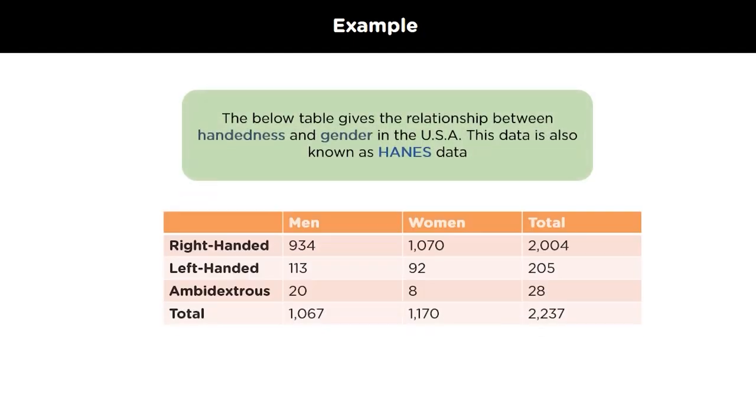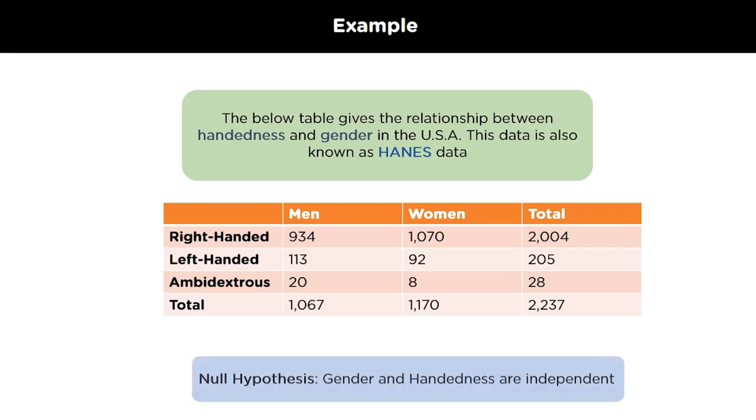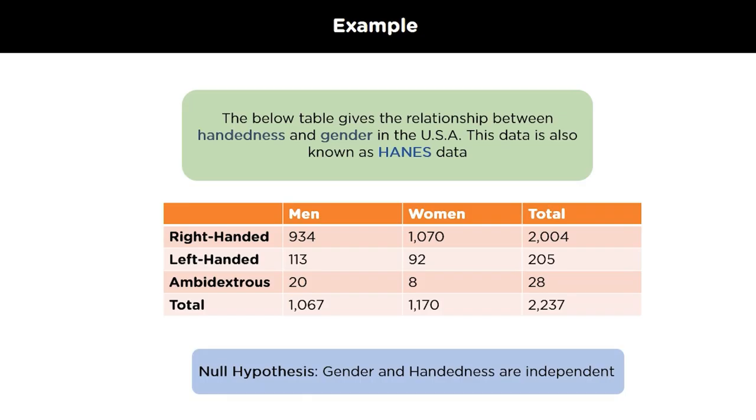Let's say we want to know if the gender has anything to do with the handedness of the people. We have the data of 2237 people in a simple random sample to find out if they are left-handed, right-handed, or both. The results of the survey are shown in the table below. To see if the gender is related to handedness, we perform the chi-square test. The first step is to define the null hypothesis. The null hypothesis says that the gender and handedness are independent to each other.